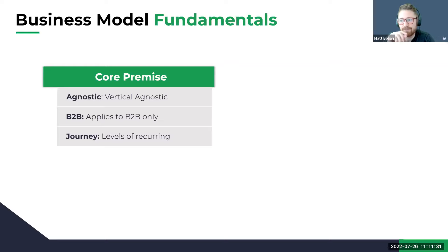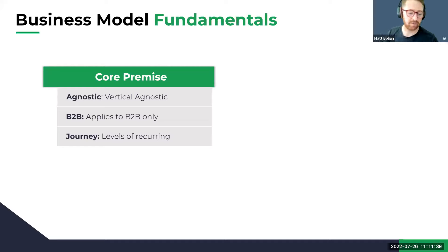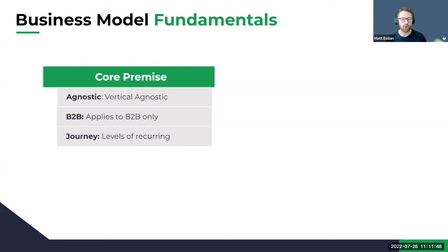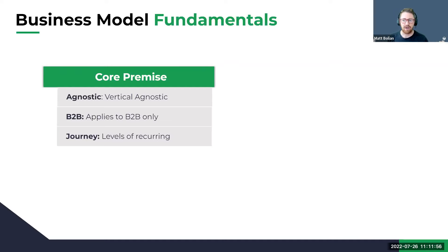The model exists on a continuum from a level of recurring revenue. On one end, you can own a product for the lifetime — say five years — and then do another large purchase. All the way to consumption, like an AWS server, where you only pay for what you use. Everyone's on this journey — it just depends on where you're at.